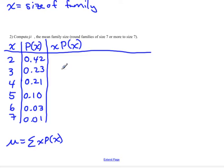I take out my calculator and ask what is 2 times 0.42, which is 0.84. Then 3 times 0.23 is 0.69. 4 times 0.21 is 0.84. 5 times 0.1 is 0.5. 6 times 0.03 is 0.18, and 7 times 0.01 is 0.07.